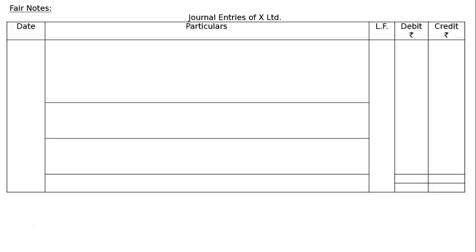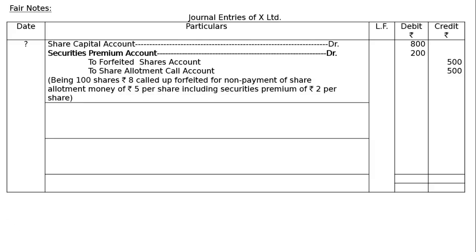Journal entries of X Ltd. Date, particulars, ledger folio, debit and credit rupees in both columns. Share Capital account debit: 100 shares into Rs.8 called up — application Rs.5, allotment Rs.3 — equals 100 into 8, Rs.800.